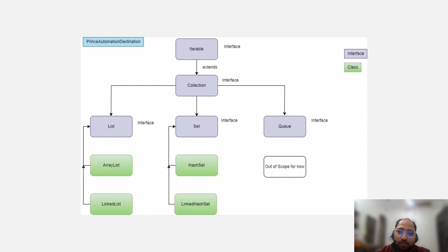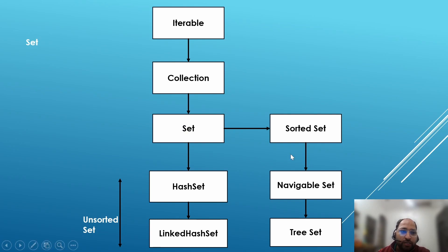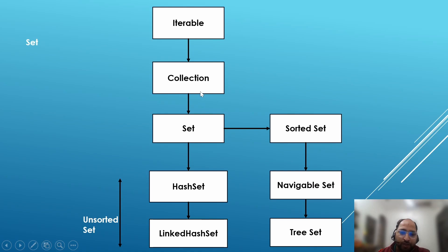Let us move on to the next collection in the series, which is Set. In case we want to store unique elements, we use the Set collection. Set falls under the Java Collection Framework — we have Iterable as the root, then Collection extending Iterable, then Set extending Collection. Set is used to store unique elements. Since Set is an interface, we need a concrete class, so we have HashSet, which provides the implementation of the Set interface. Using HashSet we can store unique values, but the downside is it does not maintain insertion order.